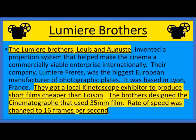Next we have the Lumière brothers, who were French. They got a local kinetoscope exhibitor to produce shorter films, cheaper than Edison — remember, Edison was holding all the copyrights and patents at that time. The brothers designed the cinematograph, which used 35-millimeter film and changed the rate of speed to 16 frames per second, establishing a new standard.